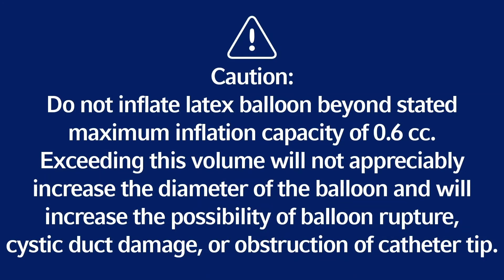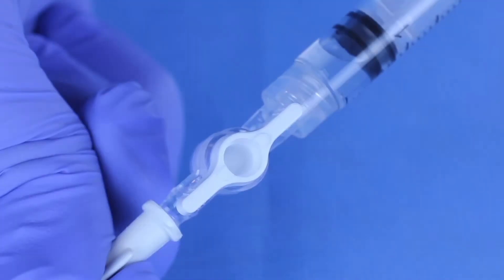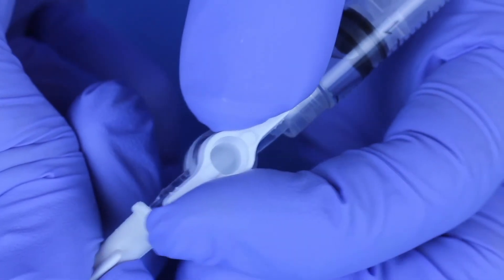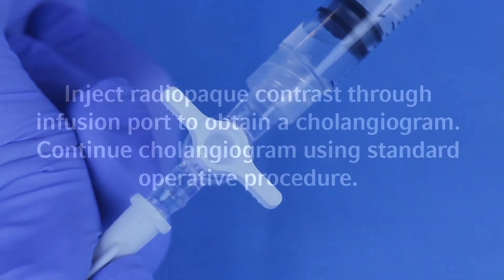Caution: do not inflate latex balloon beyond stated maximum inflation capacity of 0.6 cc. Exceeding this volume will not appreciably increase the diameter of the balloon and will increase the possibility of balloon rupture, cystic duct damage, or obstruction of catheter tip. Turn stopcock lever perpendicular to catheter to maintain balloon inflation.